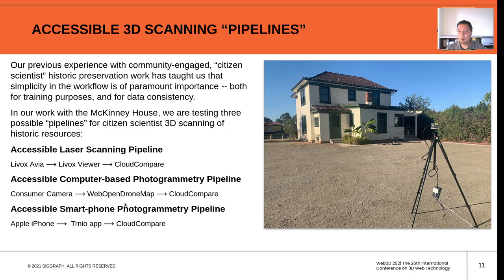All of these pipelines are shown schematically here. They are mostly open source, although Trinio is low-cost — around $5 US. WebODM has an open source solution but also a fairly affordable enterprise solution. We're using open source software called Cloud Compare to do post-processing and analysis of these point clouds, with the goal of figuring out which of these pipelines is the simplest and which produces the best data quality.